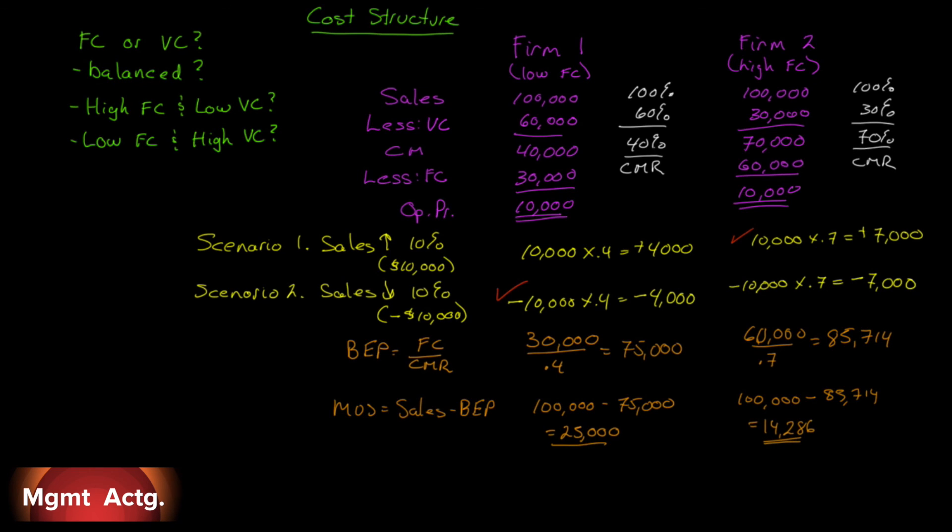So our margin of safety percentage, let's go one more time. Let's identify that Firm 1 here is the leader so far. Margin of safety percentage is our margin of safety divided by sales. And for Firm 1, our margin of safety was $25,000. Our sales were $100,000. We got a 25% margin of safety. For Firm 2, $14,286 divided by $100,000 gives us 14.3%.